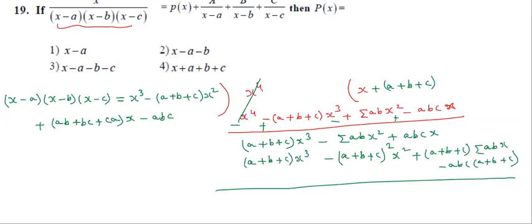Now we subtract. After cancellation, the remainder has degree less than the divisor, so we stop the long division here. The quotient Q(x) is x plus (A+B+C). So the fourth option is correct. Students, we have completed level one. Next we are going to start level two.